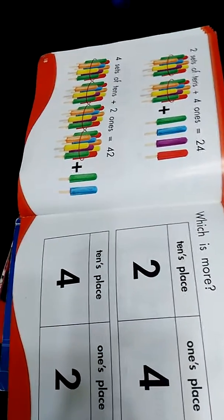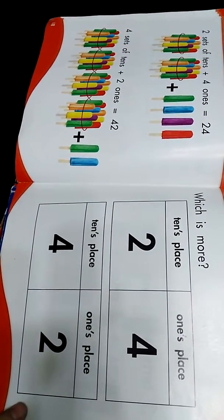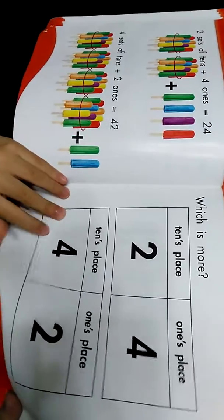2 sets of 10 plus 4 ones equals 24. 4 sets of 10 plus 2 ones equals 42. Which is more?